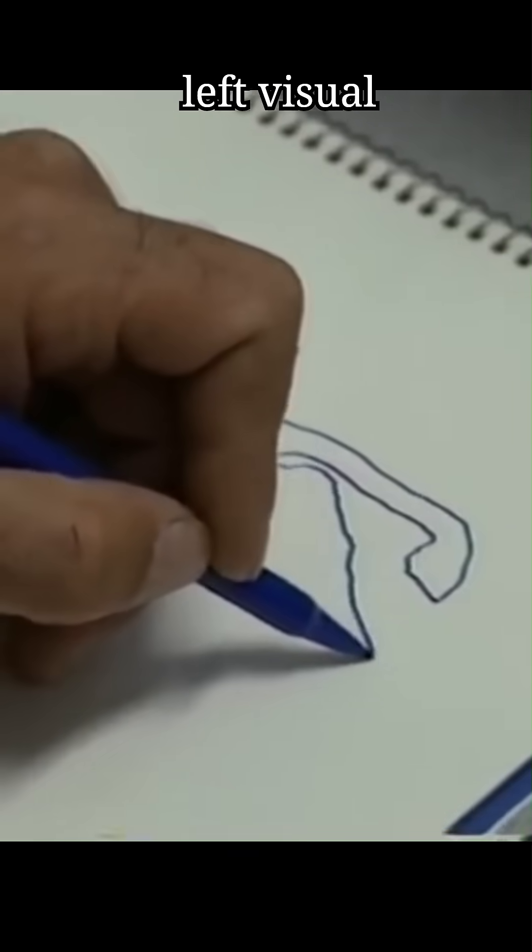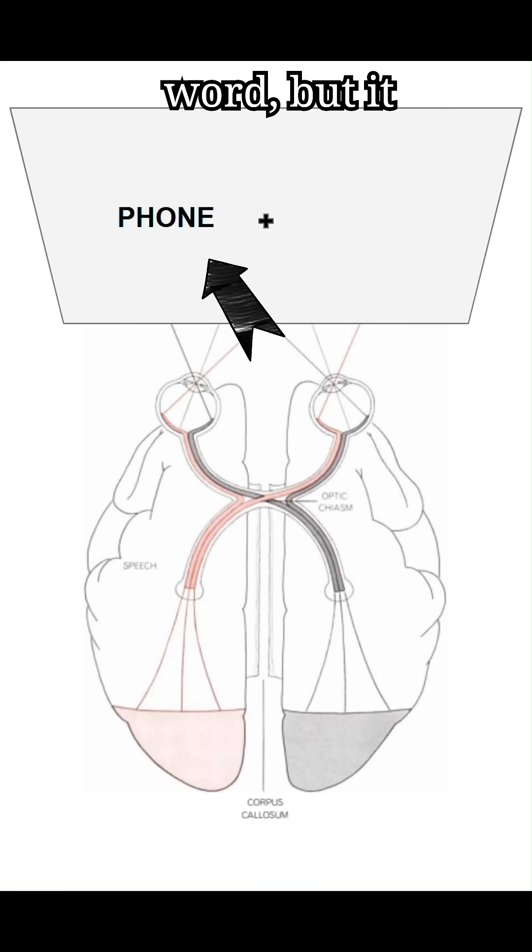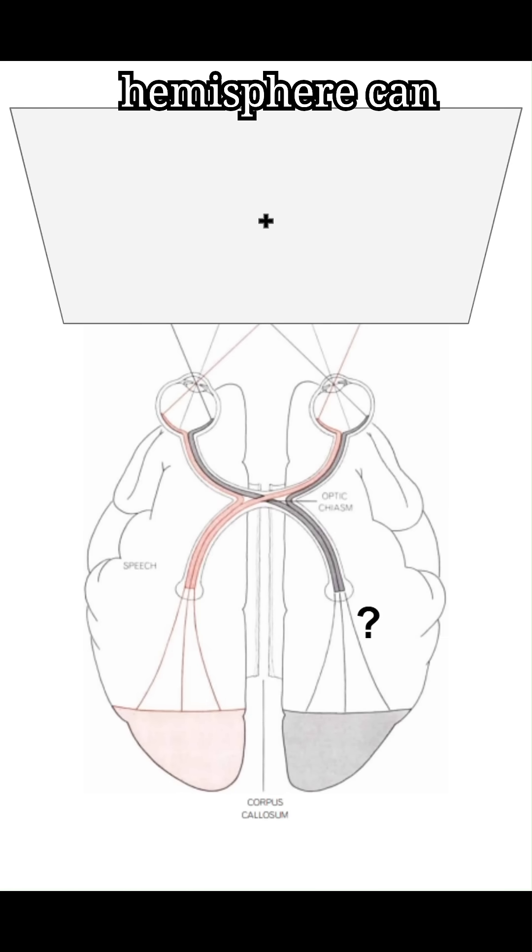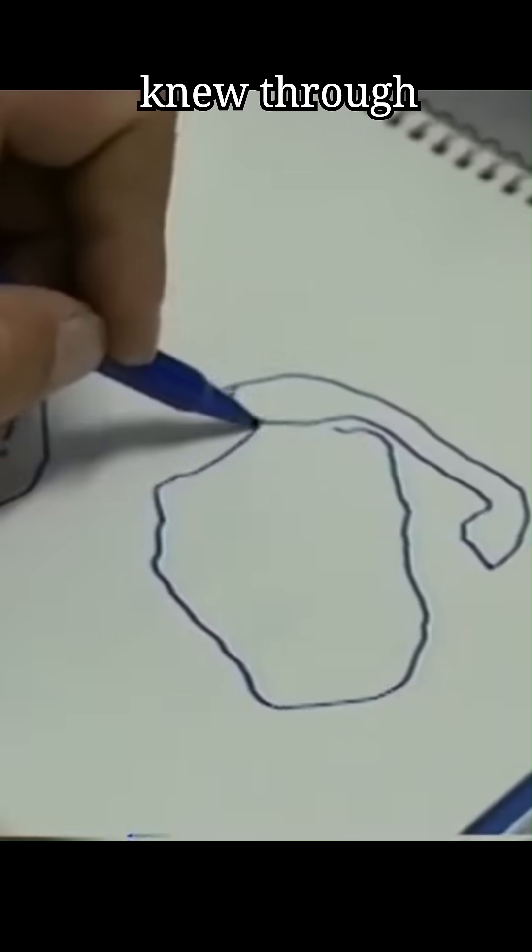That is because the left visual field goes to the right hemisphere. The right brain saw the word, but it could not speak. Only the left hemisphere can produce language. So the right brain knew, but had no way to say it. It could only show what it knew through drawing.